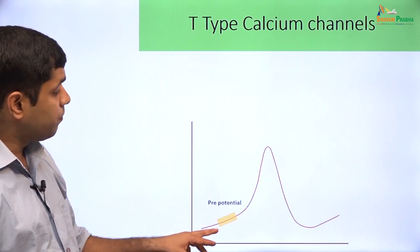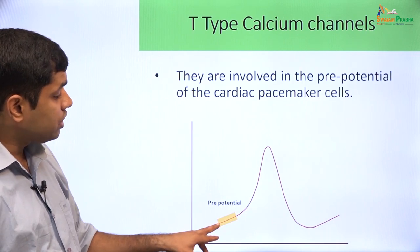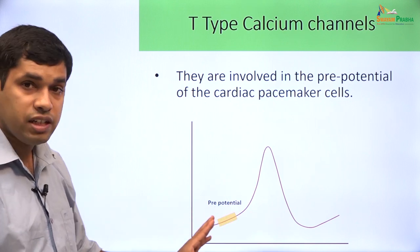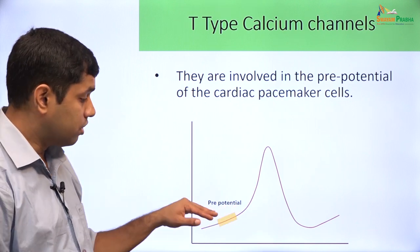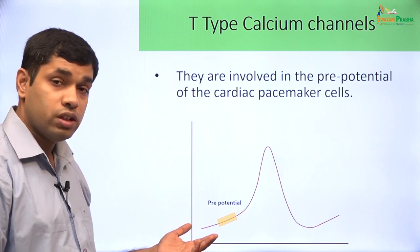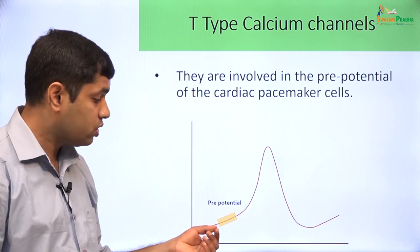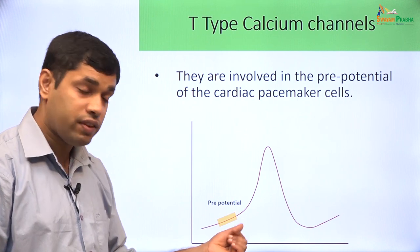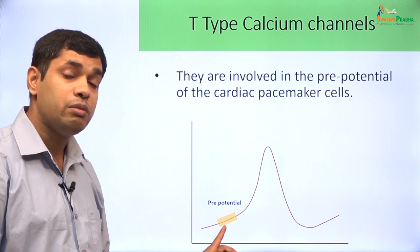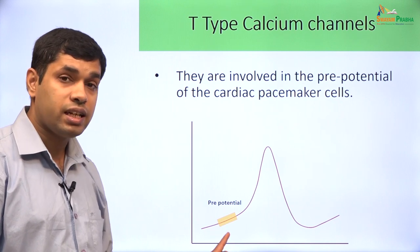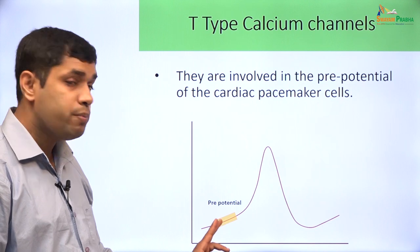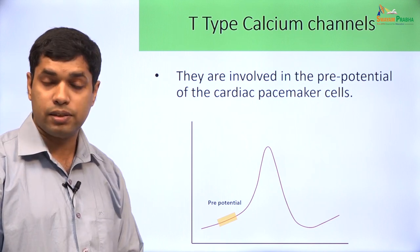The T-type calcium channel is important for the prepotential of the cardiac pacemaker cells. The cardiac pacemaker cell does not have a resting membrane potential, but it has a prepotential driven by several ion channels and transporters. One of them is the T-type calcium channel, which contributes to this prepotential of the cardiac pacemaker cells.